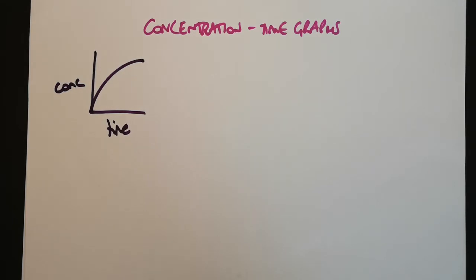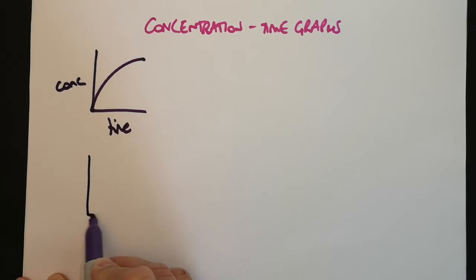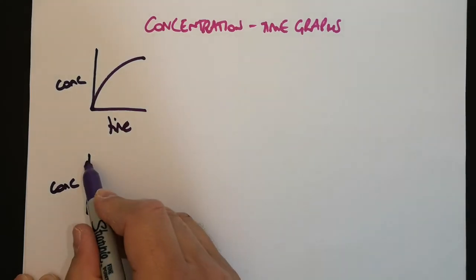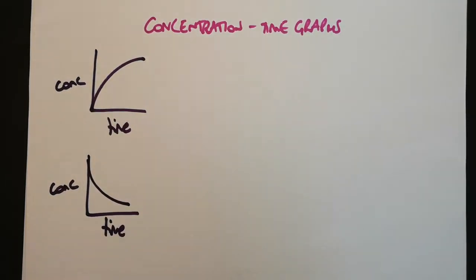When we're looking at determining the order of reaction using these, which is the ultimate aim, what we tend to do is use the concentration-time graphs of a reagent being used up, in which case they look more like that. And this is probably what you'll expect from your previous experiments.